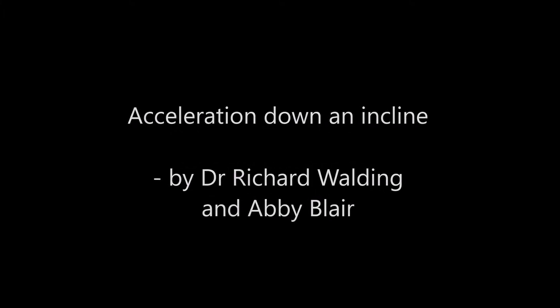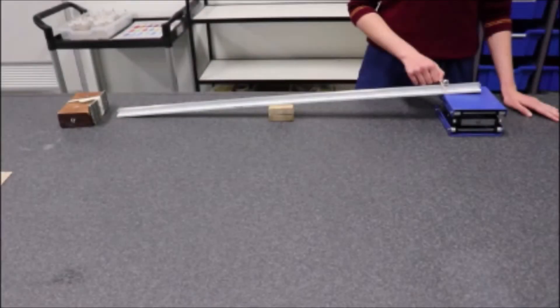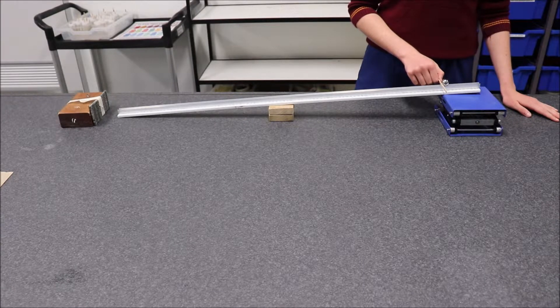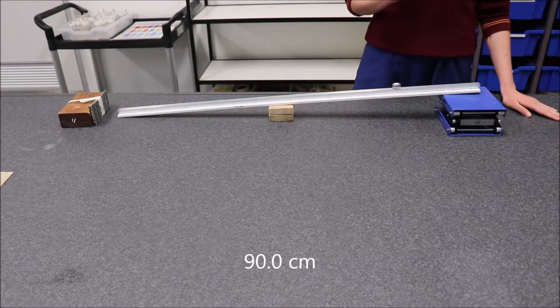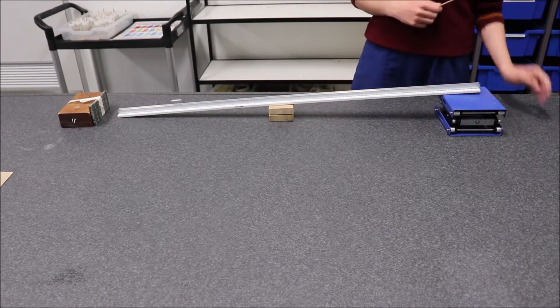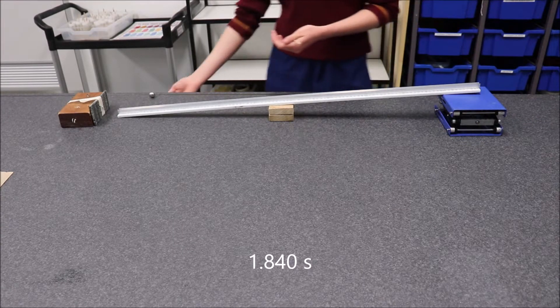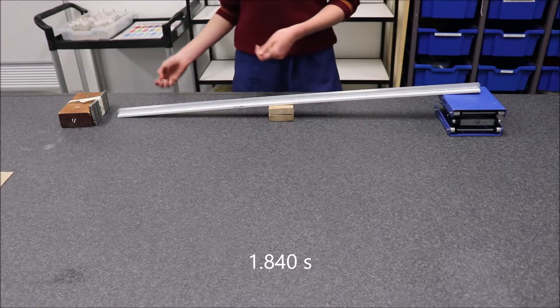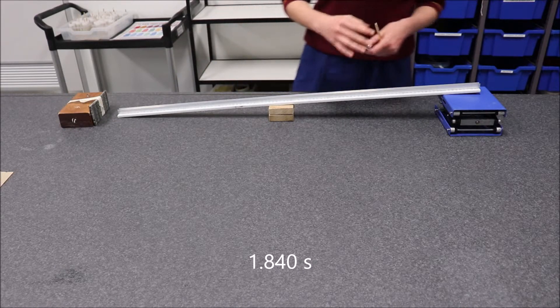The aim of this video is to provide you with data for linear motion analysis. We have an inclined plane and are going to let a steel ball bearing roll down it from different distances. Starting at 90 centimetres, it took 1.84 seconds.